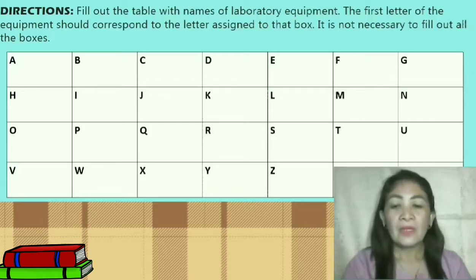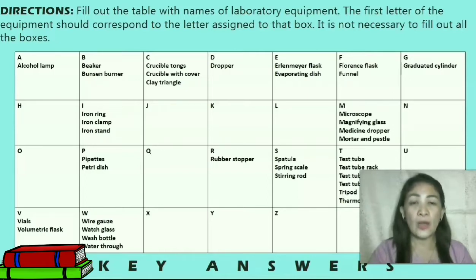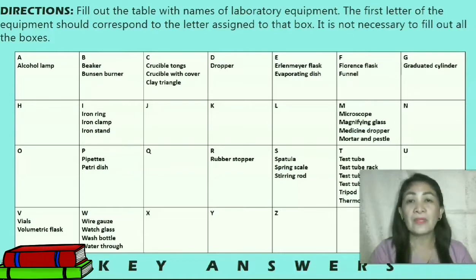Alright, let's have your answers. Letter A: Alcohol lamp. Letter B: Beaker, balance, and Bunsen burner. Letter C: Crucible tongs, crucible with cover, clay triangle. Letter D: Dropper. Letter E: Erlenmeyer flask, evaporating dish. Letter F: Florence flask, funnel. Letter G: Graduated cylinder.